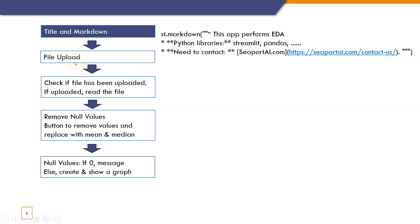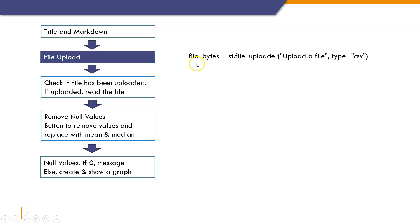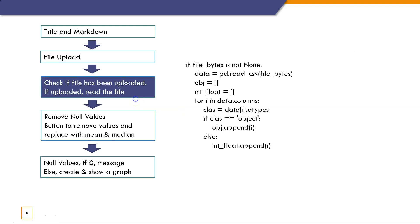For the file upload, we use file_uploader and mention CSV. Please note that this app is developed for CSV files only — if you upload an Excel (.xls) file, you will encounter an error. We then check if the file upload was successful. We check if file_bytes is not None — file_bytes is the variable declared for uploading the file. Then we proceed to read the file.